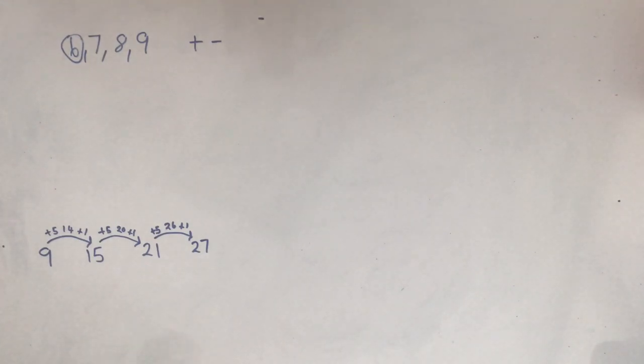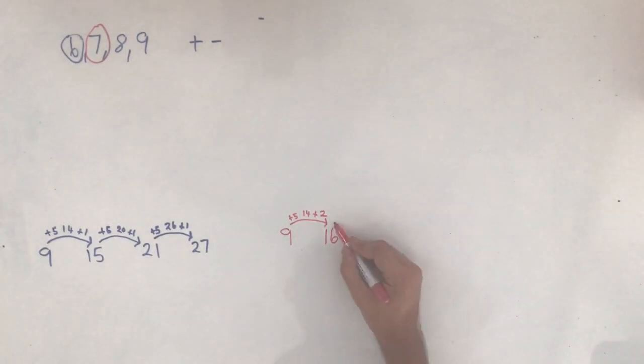Let's have a go at 7 and I'll do this in a red pen so that you can see the difference. I'm going to start at 9 again and I wonder if you can work out what I'm going to do. I'm going to start at 9, I'm going to add 5 which makes 14, but instead of adding 1 this time I'm going to add 2. So that takes me to 16. Then I'm going to add 5 which takes me to 21.